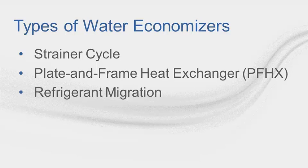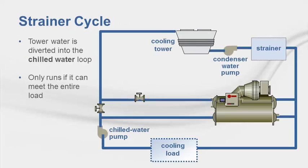Three types of water economizers are considered within this presentation: strainer cycle, plate and frame heat exchangers, and refrigerant migration. In the strainer cycle, tower water is valved directly into the chilled water loop when the outdoor air wet bulb is low enough. It's the most efficient water economizer option, but is not widely accepted due to fouling concerns.